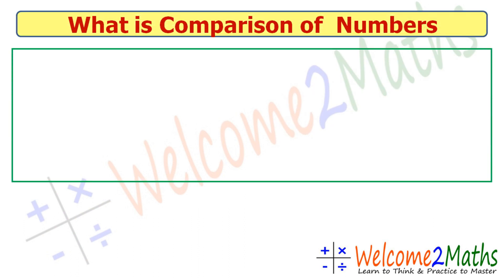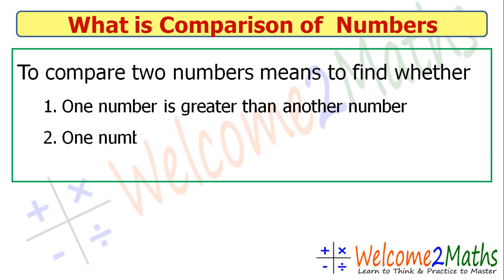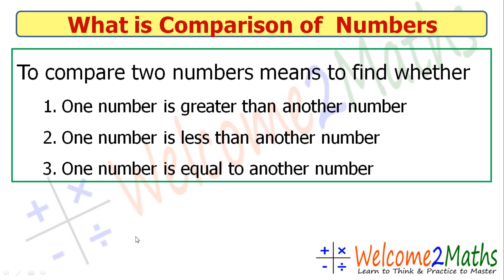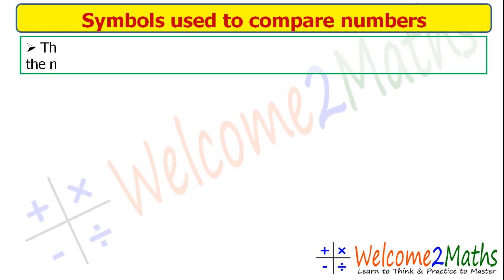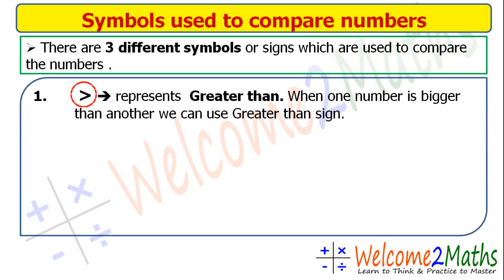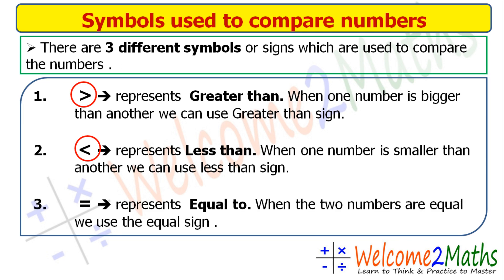First, what is comparison of numbers? To compare two numbers means to find whether one number is greater than another, one number is less than another, or one number is equal to another. There are three symbols used to compare numbers: greater than, less than, and equal to.